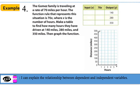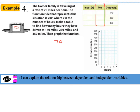For example 4, the Gomez family is traveling at a rate of 70 miles per hour. The function rule that represents this situation is 70 times x, where x is the number of hours. Make a table to find how many hours they have driven at 140 miles, 280 miles, and 350 miles, then graph the function. They give us 70x as the relationship between input and output, and we work backwards since the output is given. So 70x equals 140: dividing both sides by 70 gives x equals 2, meaning input is 2 hours. Checking: 70 times 2 equals 140.